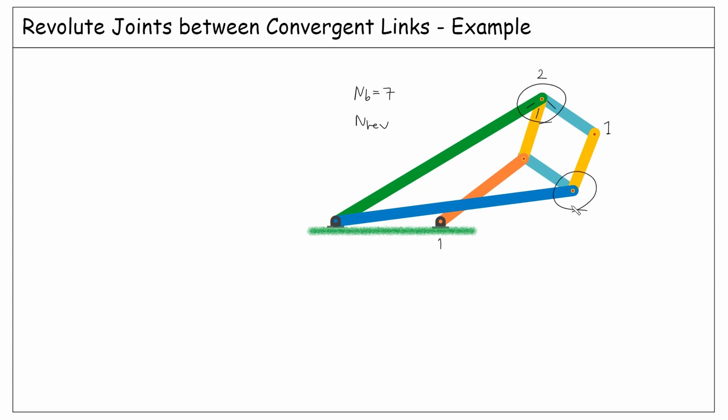That's also the case for this joint where we have one, two, three links, so two revolute joints here. And also this joint, one, two, three links, so two revolute joints here as well. Finally here we have two links plus the ground, so again three links and we count two revolute joints.